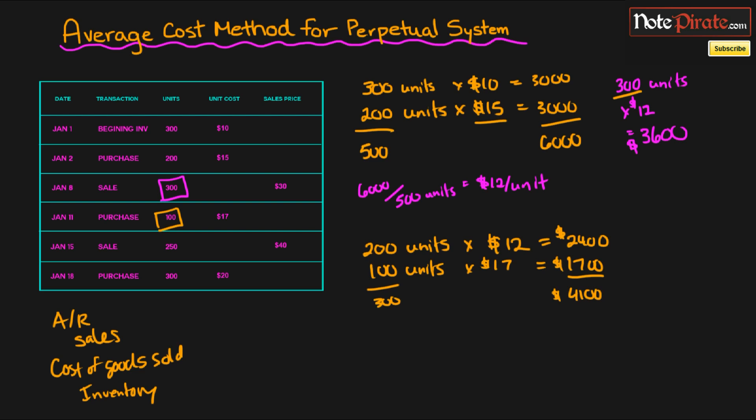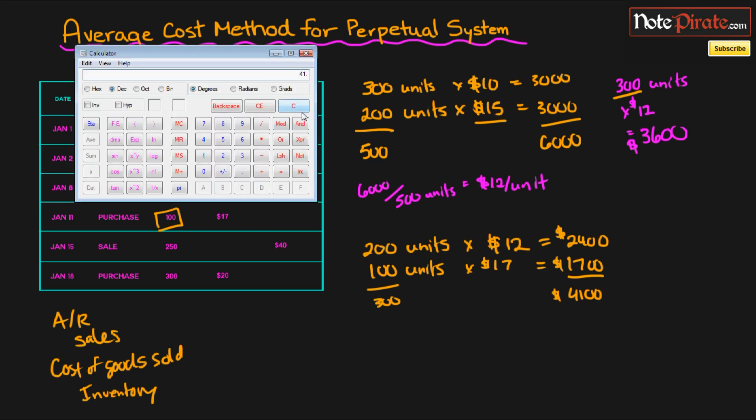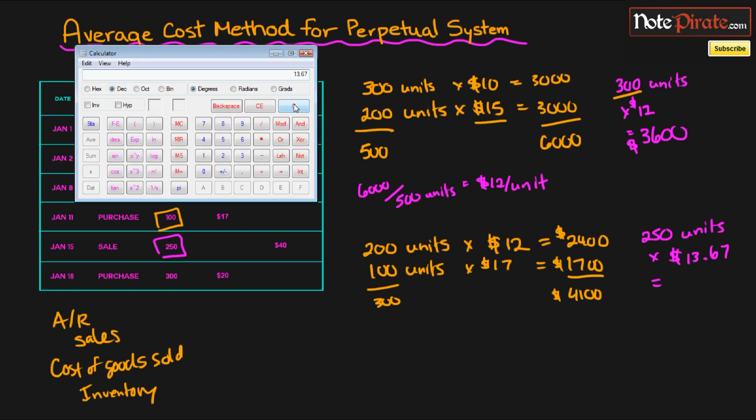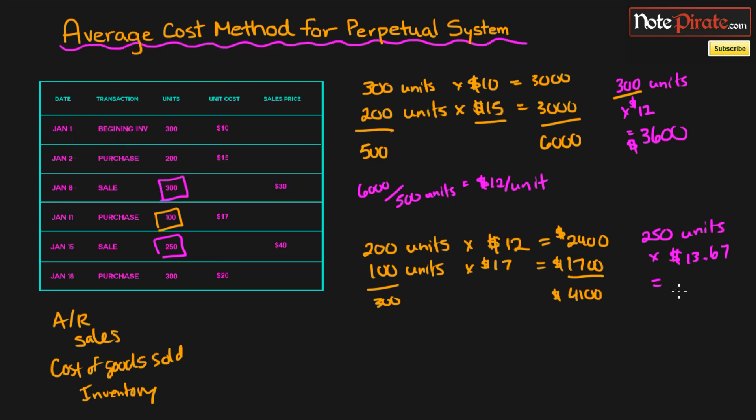So $4,100 divided by 300 units is going to give us an average cost of $13.67. So now that we are going to make a sale for 250 units, we're going to say 250 units times $13.67. Since that is our unit cost now, our average unit cost.